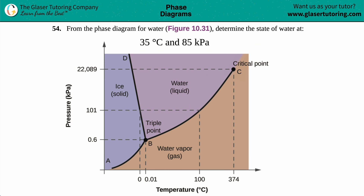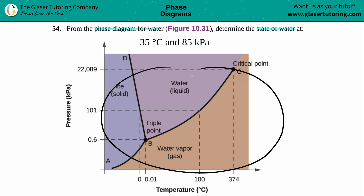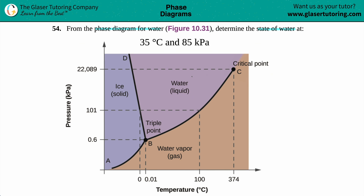Number 54 from the phase diagram for water, which was figure 10.31 in the textbook. Determine the state of water at 35 degrees Celsius and 85 kilopascals. I pulled up the figure right here — this is for water.